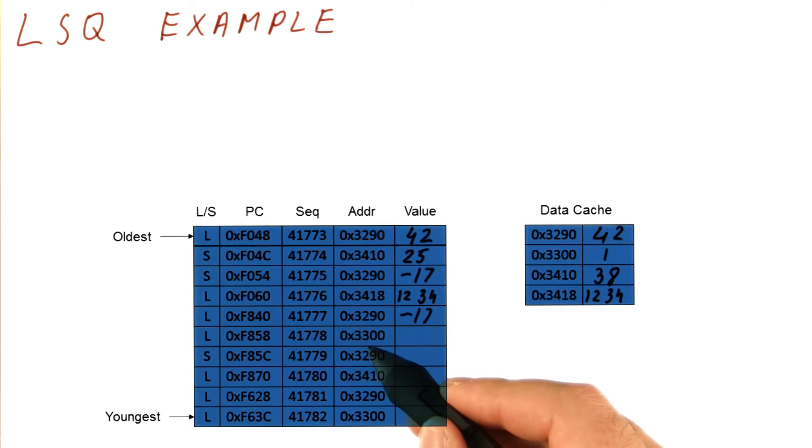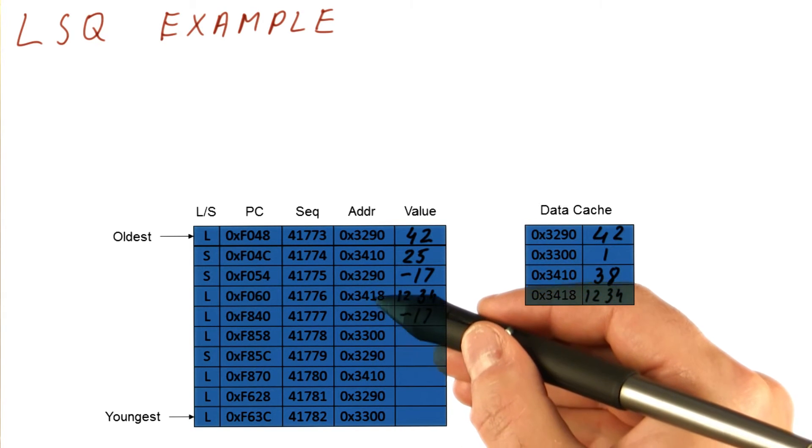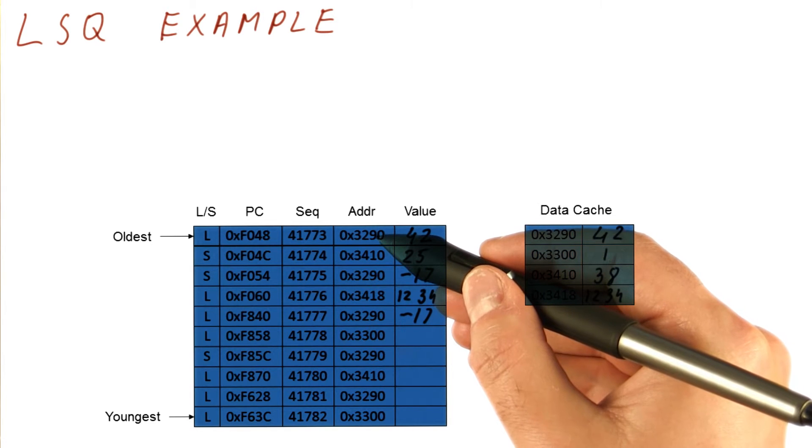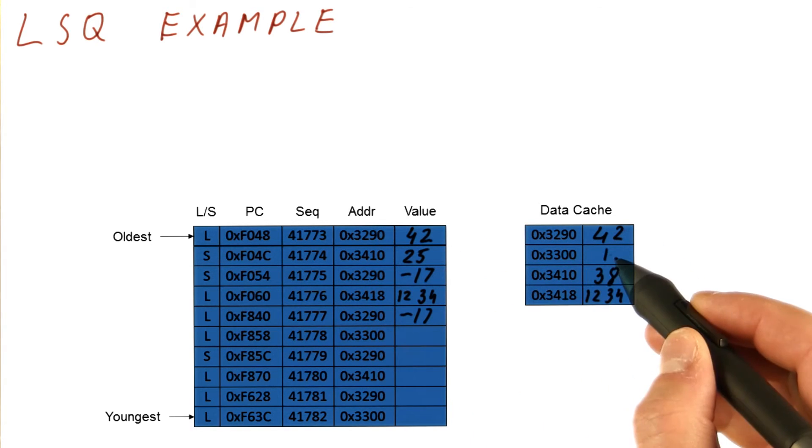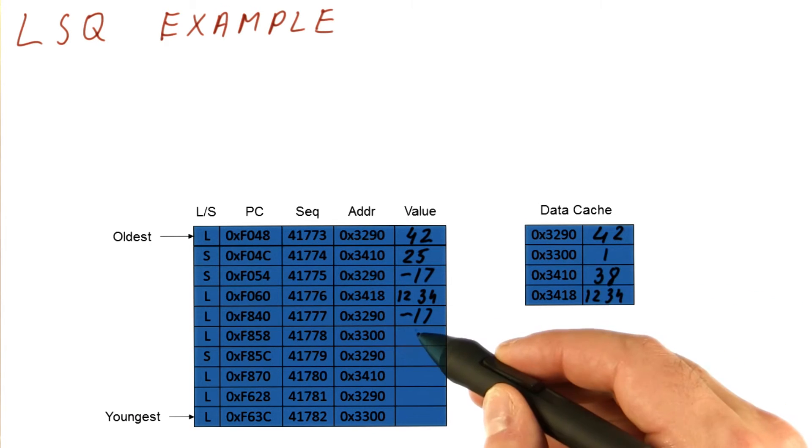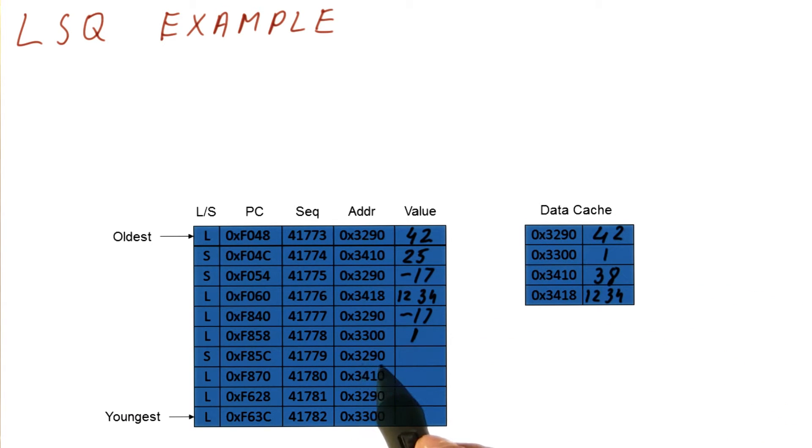The next load accesses address 3300. It searches the previous stores and doesn't find any that match this address. So it's going to go to the cache and load from address 3300, and it gets 1. Next, we have another store to 3290. Let's say that the value stored there is now 0.